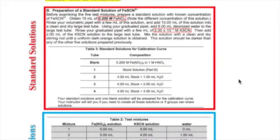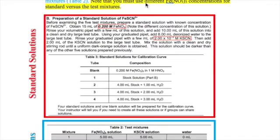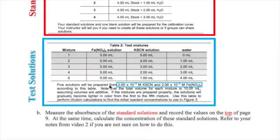The first part of the lab is to make all the solutions you will need today. The recipe for the standard solutions are in part B and table 3 of your lab procedure. The recipe for the test mixtures are in table 2. Make all these solutions in test tubes. Mix them with a stirring rod.